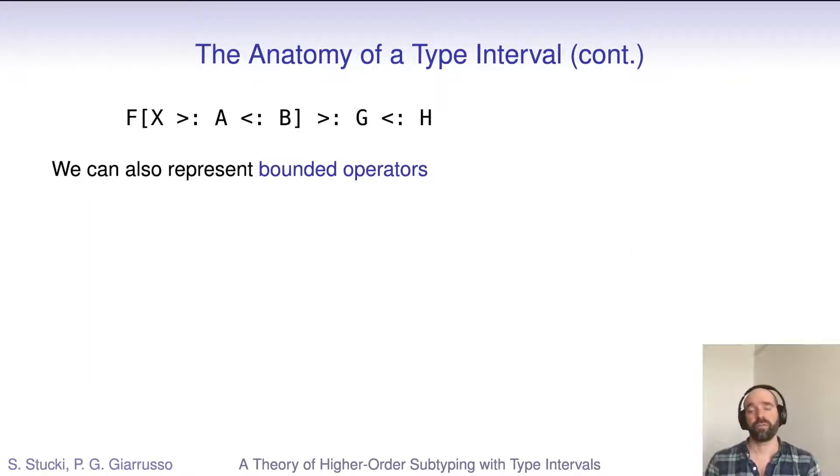What I've shown you so far could really have been expressed in DOT already. What's new in F-omega-int is that we also represent type operators explicitly. So here's the general template of a type operator with one parameter. As before, we can declare bounds on f itself, or in this case, on its body. But we can also declare bounds on its parameter X. This is a bounded operator. In F-omega-int, such declarations are represented using dependent function kinds. They take types from one interval to another.